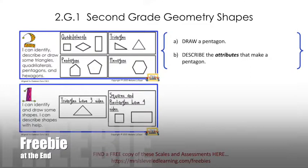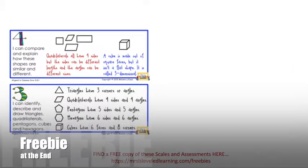Asking them to draw a shape will give you a little more information than having them point, color, or circle pictures already on their paper. You want to know exactly which categories they have memorized and which ones they don't. They may think of a lot of different attributes for their pentagon — color, shape, size — but you want them to start thinking about which ones matter and which ones don't.